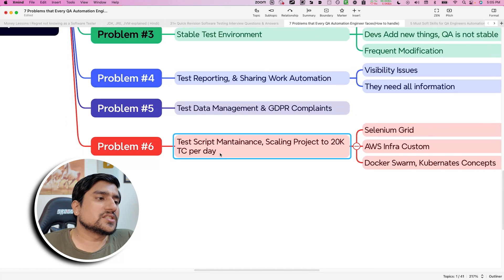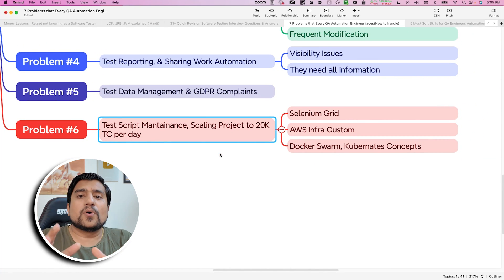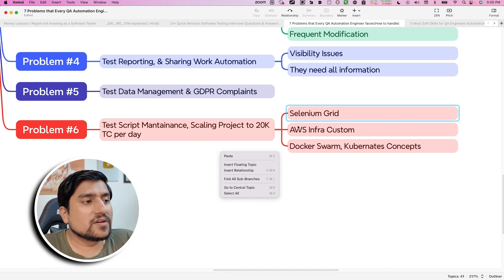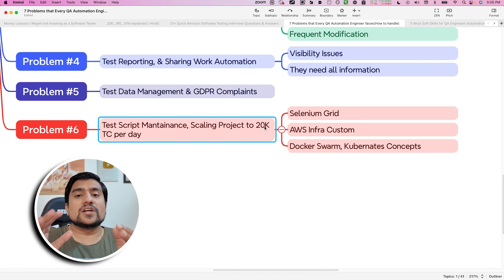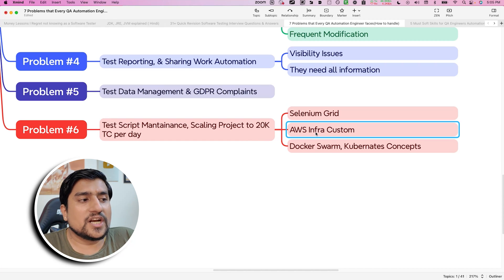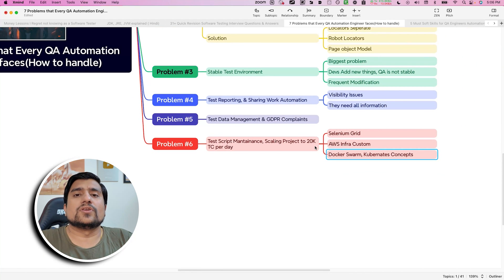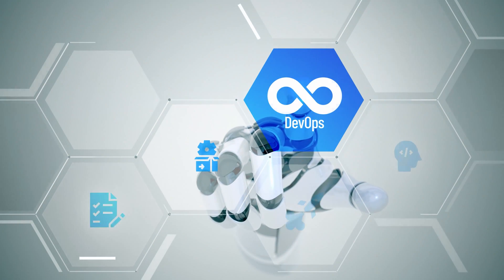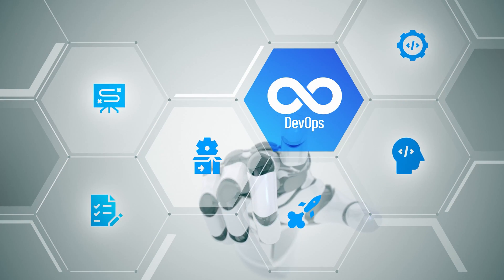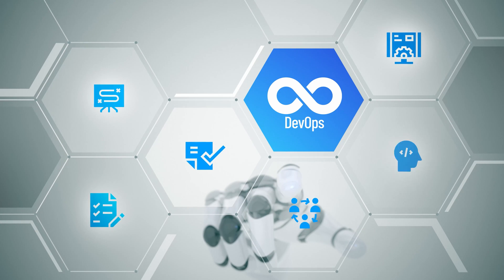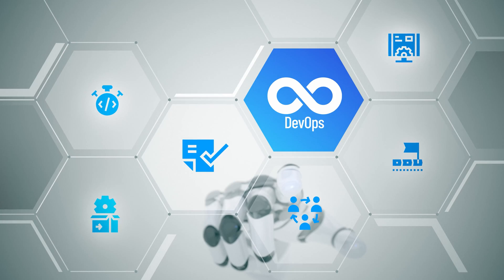The last problem is maintaining your test cases — the most important challenge. If you have more than 20,000 test cases, you'll face issues with Selenium, AWS infrastructure, Docker Swarm, and Kubernetes. Take help from DevOps, learn CI/CD concepts, and save yourself from test management issues. We also dedicate around 30% of our weekly bandwidth specifically to maintaining and fixing failing test cases.